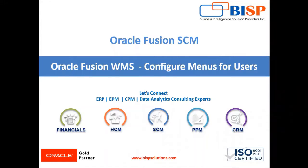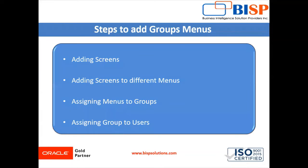Hello friends, welcome to VHP Solution. My name is Lokel Shahadhi. In today's session we are going to configure menus for the user in Oracle Fusion WMS Cloud. We have some basic steps to add the group menus: first we have to create the screen, then we have to add the screen to the different menus, then assign this menu to the groups, and finally assign the group to the user. This is the complete process to configure the menus for the user.